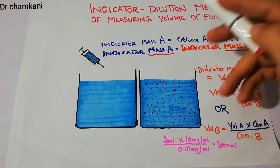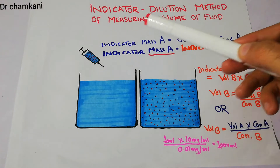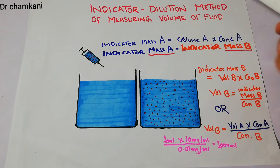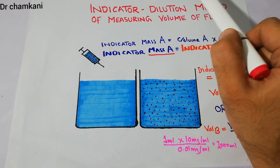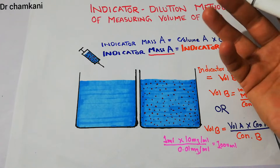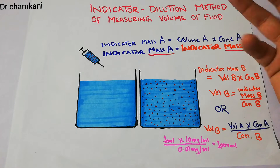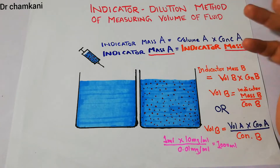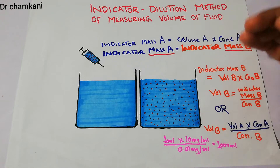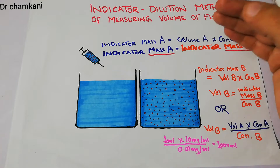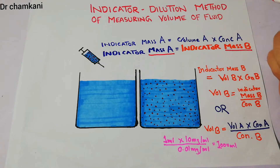In this lecture we are going to talk about the indicator dilution method of measuring volume of a fluid. In our last few lectures we were talking about the fluid in the human body and we discussed that there is around 42 liters of fluid in the human body, divided into the intracellular compartment, interstitial fluid, and the plasma, which is basically the extracellular compartment.